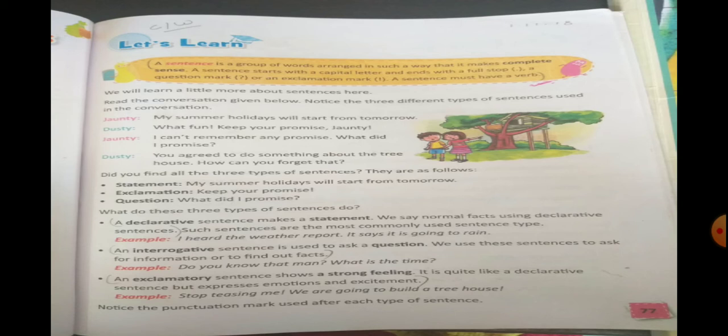Now let's learn a little more about sentences. We have a sweet conversation between Jaunty and Dusty, the two friends. Jaunty is saying: My summer holidays will start from tomorrow. Dusty is replying: What fun! Keep your promise, Jaunty. Here you can see there is an expression of feelings and emotions. Next Jaunty says: I can't remember any promise. What did I promise? So that's a question. Now Dusty is saying: You agreed to do something about the treehouse. How can you forget that?